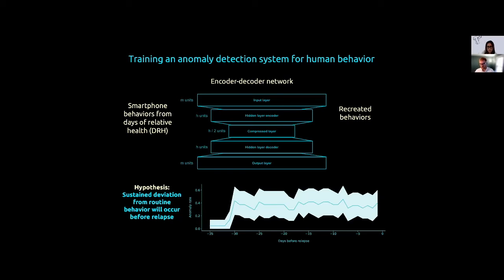Going back to David's point, there might be location features that change across different people. But here we are also able to accommodate that different people might exhibit different features — we look at anomalies across multiple dimensions and try to pull them together to understand how they factor in and assess the strength of that signal. The key thing is how do we take this data, which will be different across individuals and over time — and can even be different for the same individual over time — and still build a modeling approach that can apply across the board.